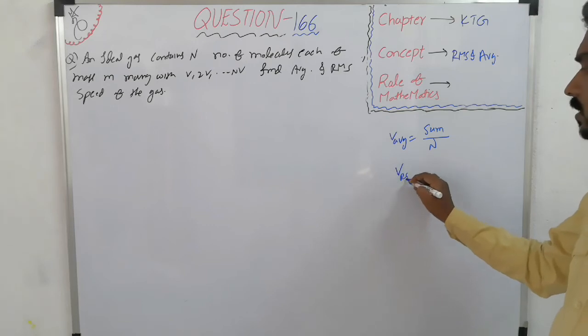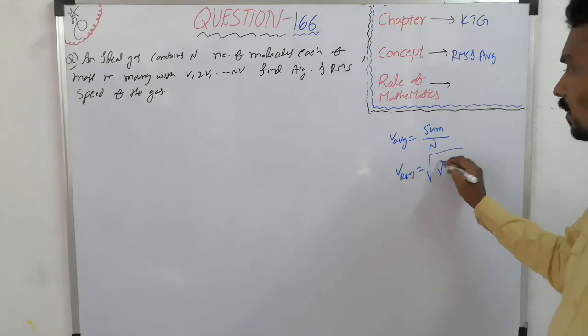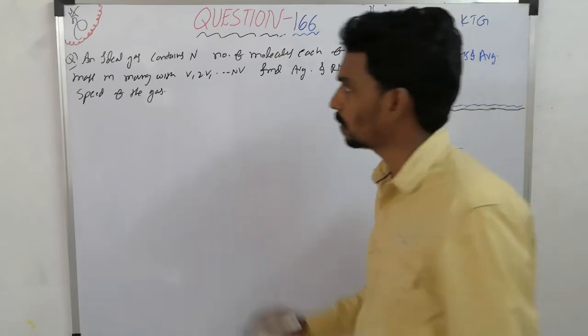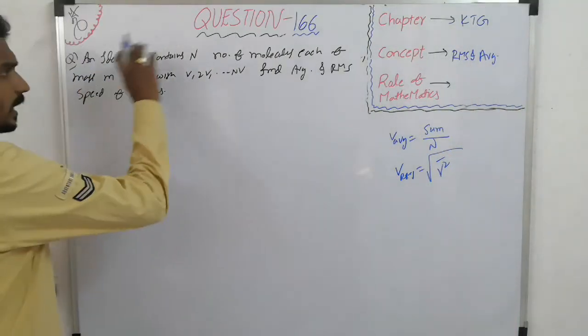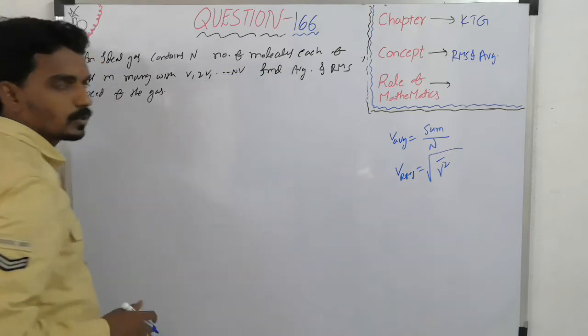What is the RMS velocity? Under root of average of square of the velocities means there are n number of molecules and they are moving with different speed.